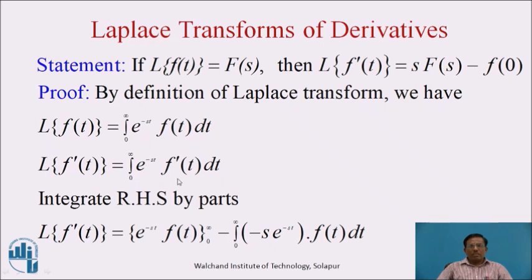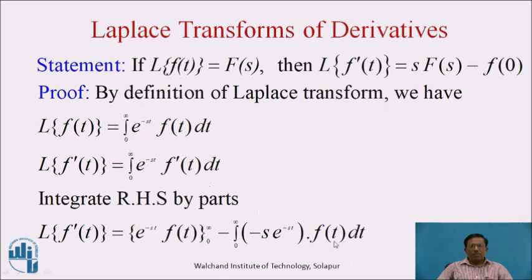Now, integrate the right-hand side using integration by parts, taking first function u as e^(−st) and second function v as f'(t). So we get Laplace Transform of f'(t) equal to: keeping e^(−st) as it is, times integration of f'(t) with respect to t, which is f(t), evaluated with limit 0 to infinity, minus the integral with limit 0 to infinity of the derivative of e^(−st) with respect to t, which is −s·e^(−st), times f(t) dt.